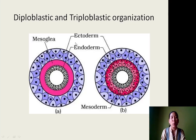In higher organisms there are three germinal layers — that is ectoderm, endoderm, and in between them there is mesoderm. Having three germinal layers, these organisms are called triploblastic. This again forms an important basis of classification in the animal kingdom.